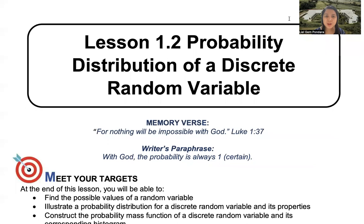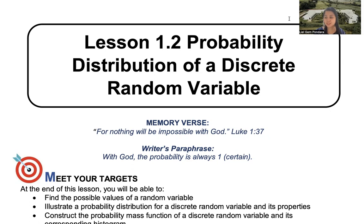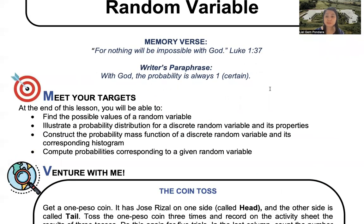Good morning and welcome to our Statistics and Probability class. This morning we'll have Lesson 1.2 about the probability distribution of a discrete random variable. Our memory verse is found in Luke 1:37: 'For nothing will be impossible with God.' Paraphrased: with God, that probability is always one. At the end of our class today, you'll be able to find the possible values of a random variable, illustrate a probability distribution, and construct the probability mass function.